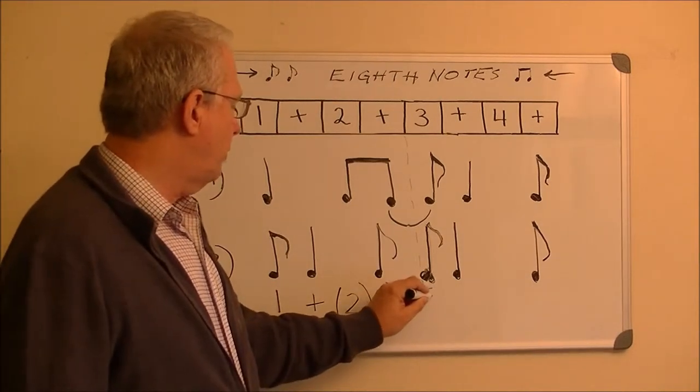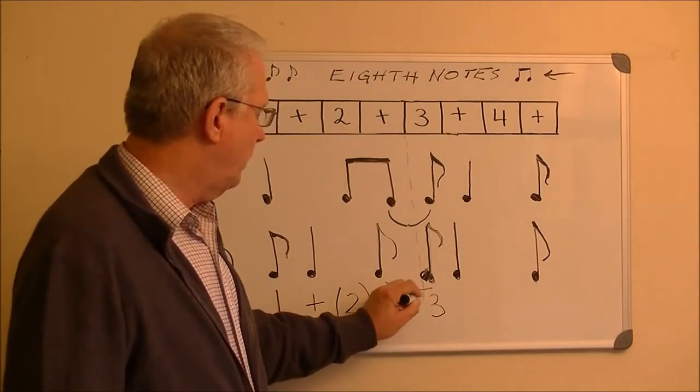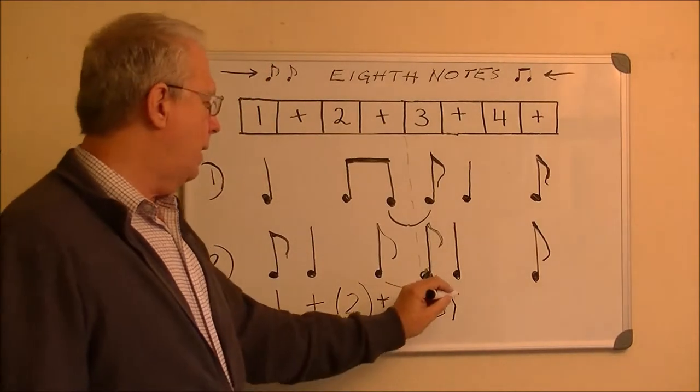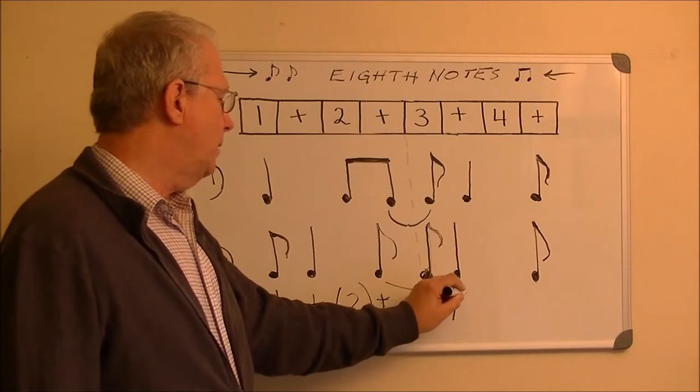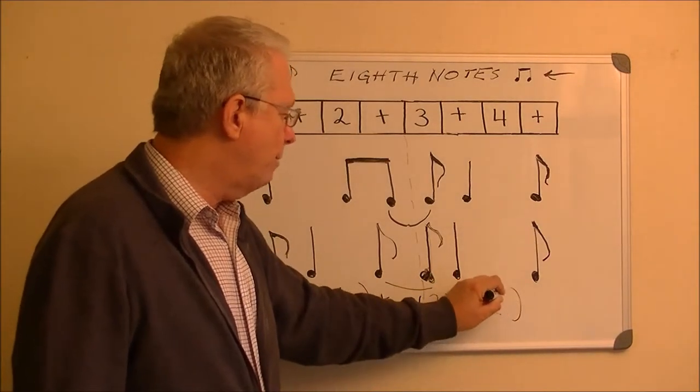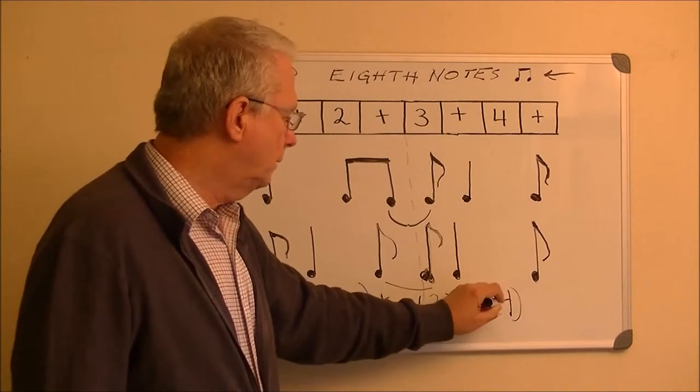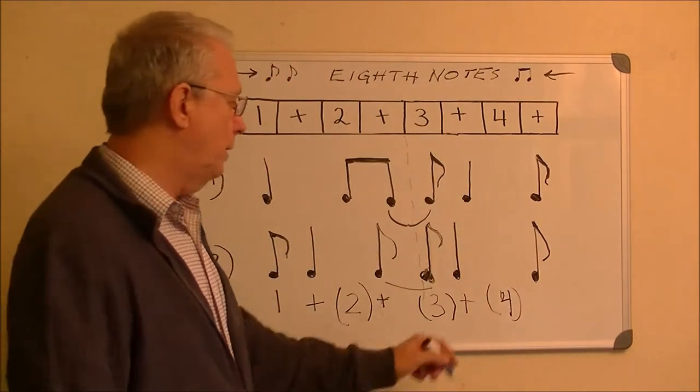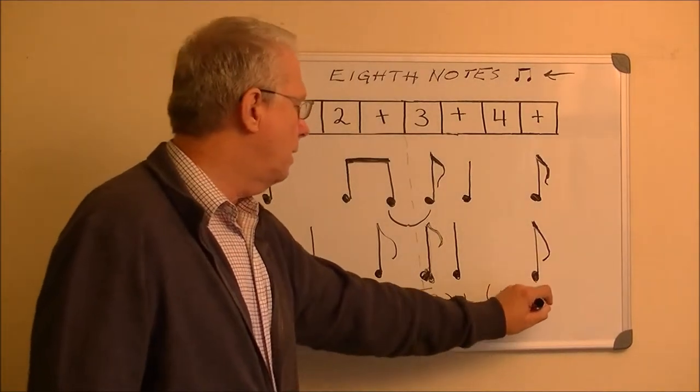This is 3, but nothing happens on 3, so I put a parentheses around it. And now, this is the and of 3, and this is 4, but nothing happens on 4, other than the note you just played continues through the 4th beat. And this is the and of 4.